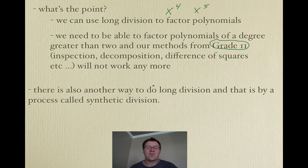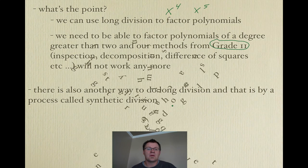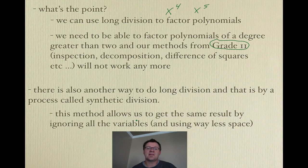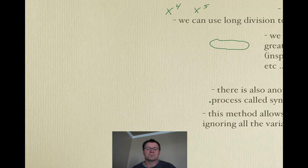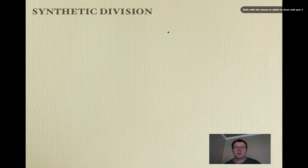So, lucky for you and lucky for everybody, there's also another way to do long division. And it is by a process called synthetic division. And the good thing about synthetic division is that it allows us to get the same result. And we don't have to worry about any variables. We can just worry about numbers. And it uses way less space. In synthetic division, there are some specific steps that we need to follow. We're going to use our previous example and see if we can come up with the same answer. Now, let's remember that the answer there, the remainder, was 12.